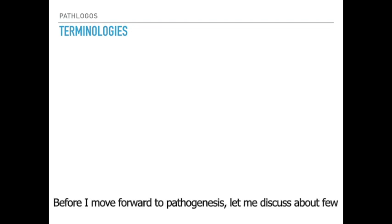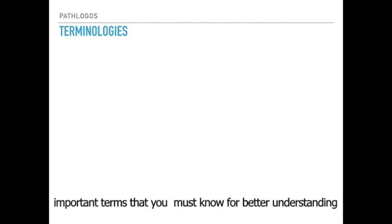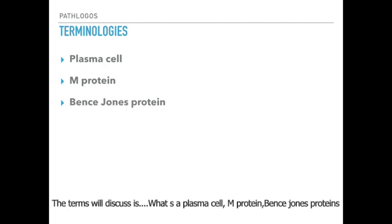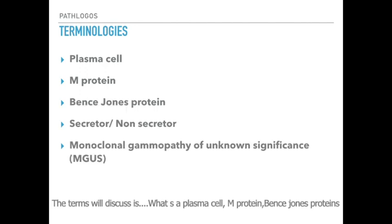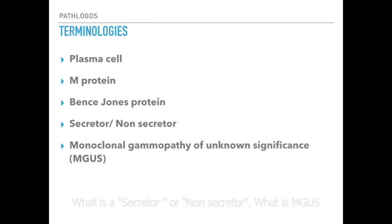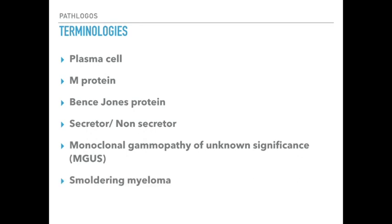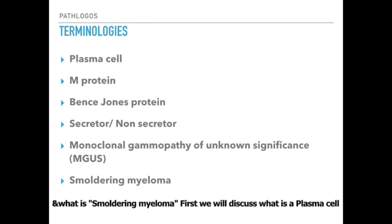Before I move forward to pathogenesis, let me discuss a few important terms that you must know for better understanding of the topic. The terms we'll discuss are plasma cell, M-protein, Bence-Jones protein, what is the secretor non-secretor, what is monoclonal gammopathy of unknown significance, and what is smoldering myeloma.